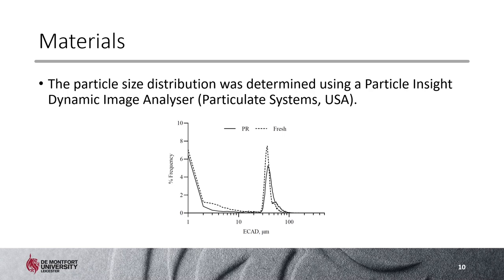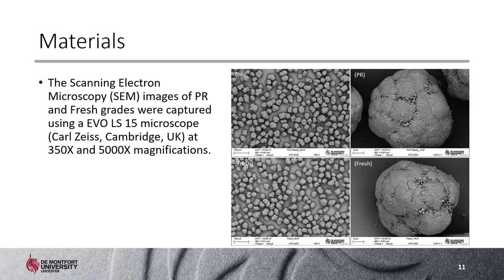Scanning electron microscopy images of the two grades were captured at 350× and 5000× magnifications. It was observed that the general shape and overall morphology of the particles were very similar to each other. The only difference between fresh and PR grades was that on the surface of PR grade particles there were plenty of nano-sized small features, compared to particles from the fresh grade which were smoother on the surface.